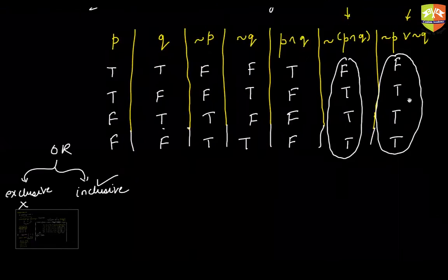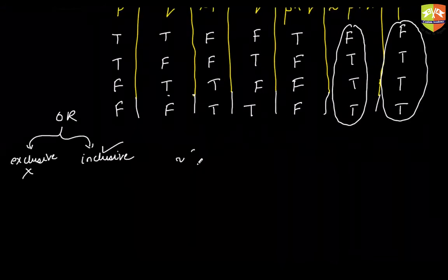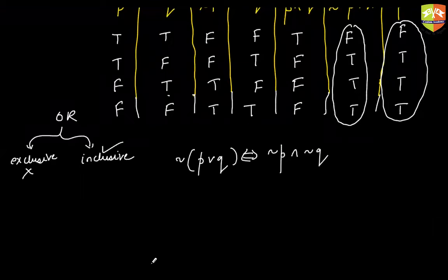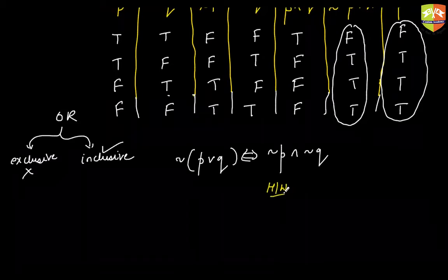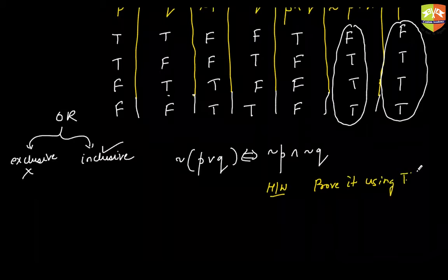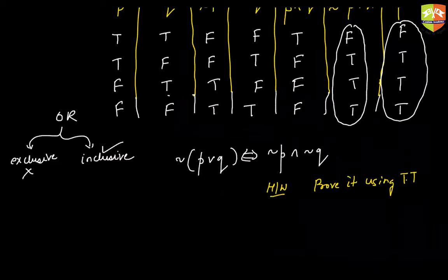By De Morgan's law, similarly, the negation of a disjunction is logically equivalent to the conjunction of their respective negations. This is left as an exercise — please prove it using a truth table.